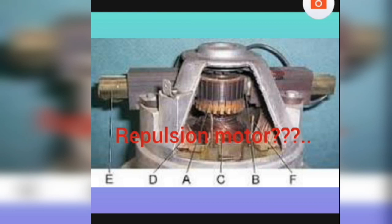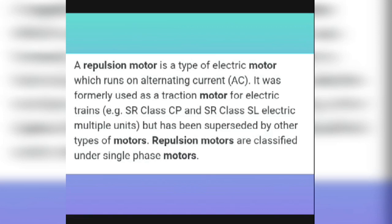First, I will be clear about the definition of a repulsion motor. A repulsion motor is a type of electrical motor which runs on alternating current, meaning AC current. It was formerly used as a traction motor for electric trains, SR class, CP and CR class SL electric multiple units, but has been replaced by other types. Repulsion motors are classified under single phase motors, and this motor is an AC machine that works on AC.